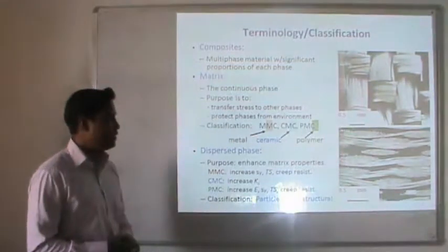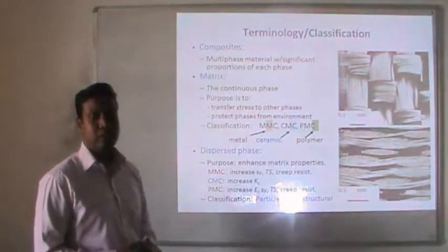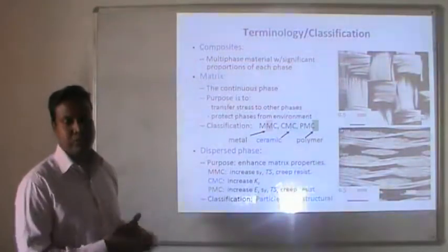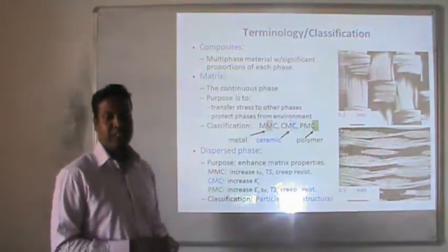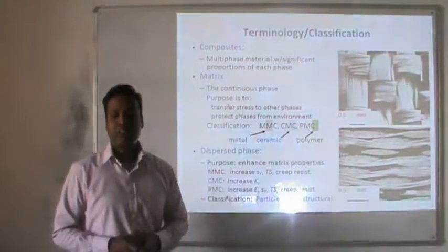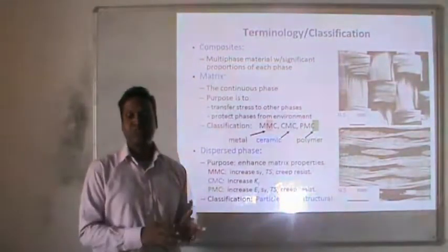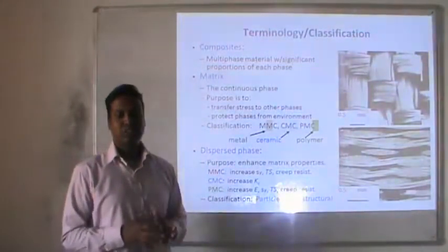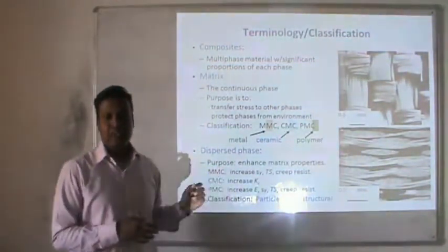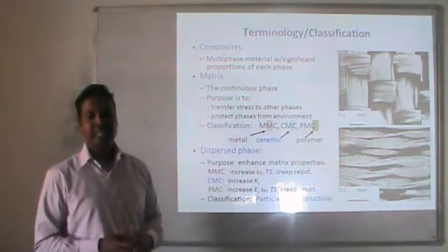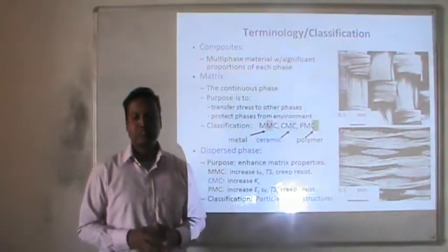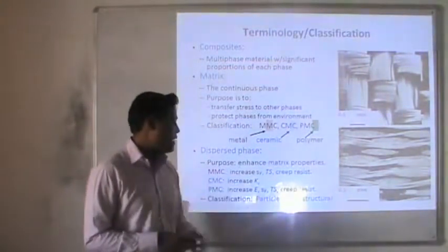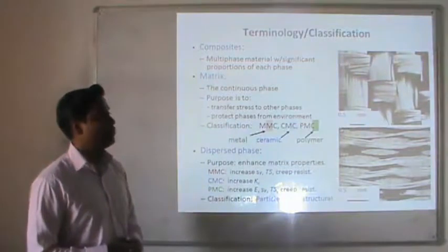MMC increases yield strength, tensile strength, and creep resistance. CMC increases bulk modulus. PMC increases Young's modulus (modulus of elasticity), yield strength, tensile strength, and creep resistance. The classification of the dispersed phase includes particles, fibers, and structural forms.